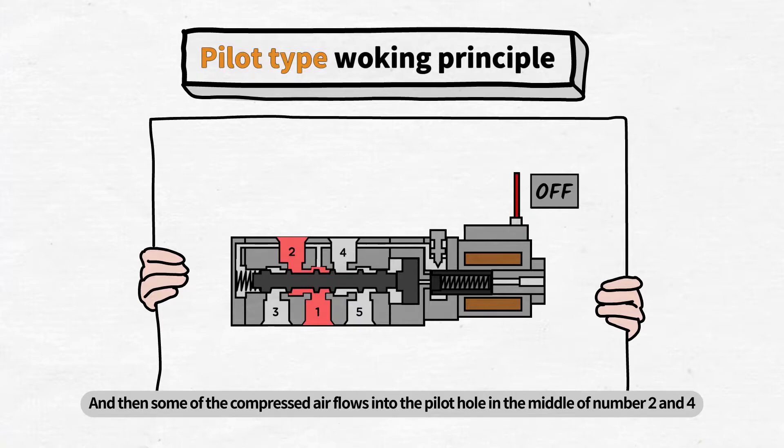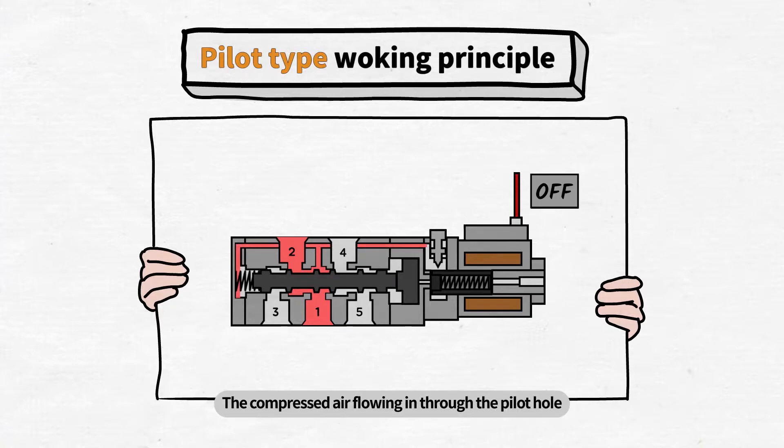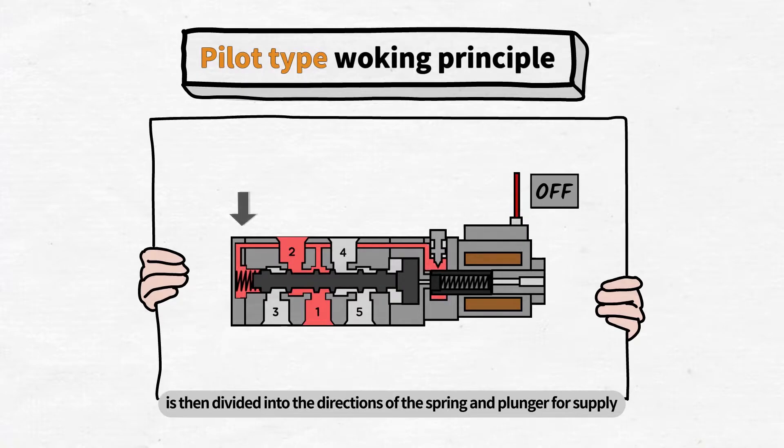And then some of the compressed air flows into the pilot hole in the middle of number 2 and 4. The compressed air flowing in through the pilot hole is then divided into the directions of the spring and plunger for supply.